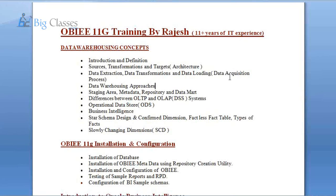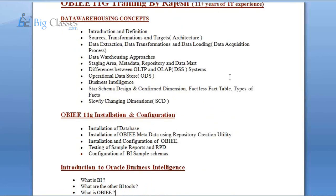Once we're done with the data warehousing concepts, we will move to the OBIEE 11G installation. The 11G installation, if it goes smoothly, will be done within about an hour. But if there are problems — for example, if something gets corrupted during installation — then there will be a lot of issues. This is one of the more complex installations we'll have to go through, so we'll be doing this carefully as part of the course.